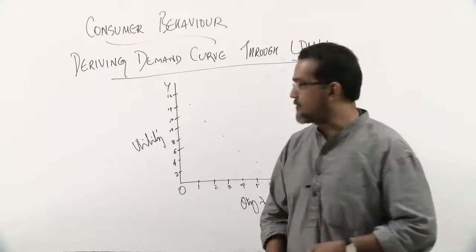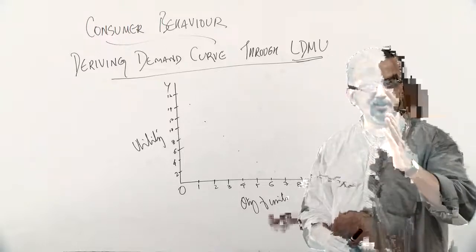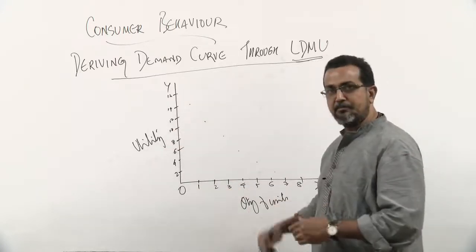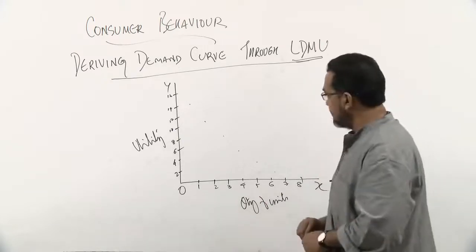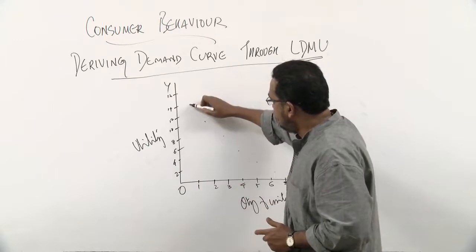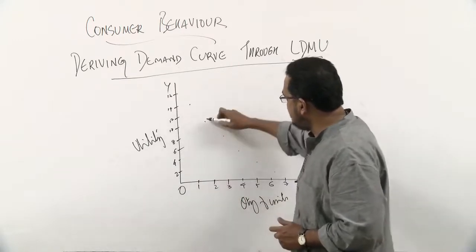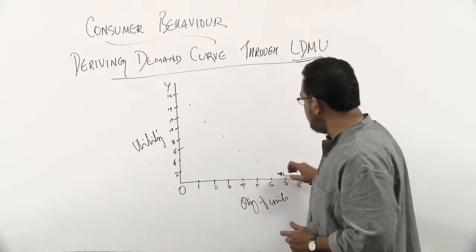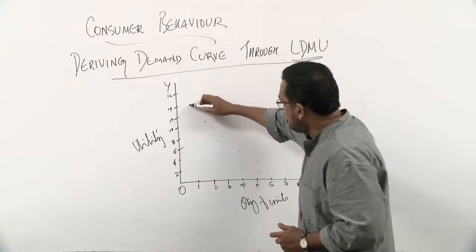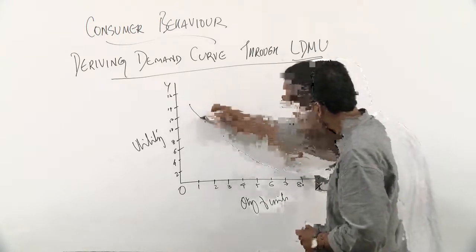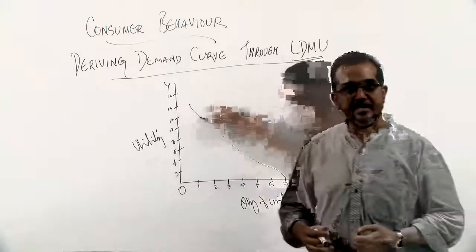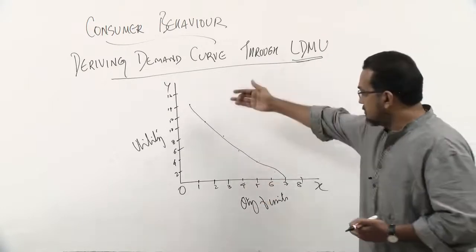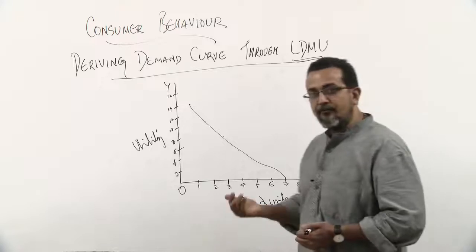Let's see how the demand curve is derived from the law of diminishing marginal utility using this diagram. On the y-axis we have utility — specifically marginal utility — and on the x-axis the quantity of units. The first unit gives a high level of utility at 14, the second gives 10, the third 8, the fourth 4, the fifth around 3, and it progressively falls, potentially touching zero at the seventh unit.